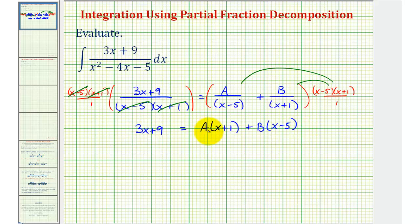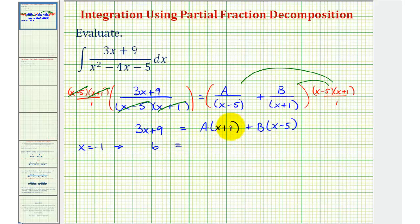This is called the basic equation, and now we're going to solve this for A and B by selecting convenient values of x. Notice how if we select x equals negative one, this product would be zero. So we'll first choose x equals negative one and perform substitution. If x is negative one, we would have three times negative one plus nine — that's six — equals B times negative one minus five, that's negative six, so we'd have negative six B. Dividing both sides by negative six, B is equal to negative one.